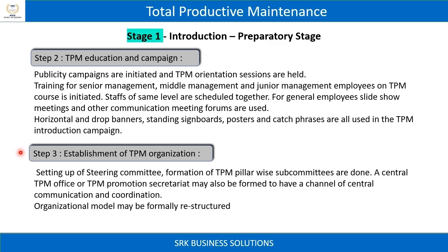Step 3: Establishment of TPM organization. Setting up of a steering committee and formation of TPM pillar-wise subcommittees are done. A central TPM office or TPM promotion secretariat may also be formed to have a channel of central communication and coordination.